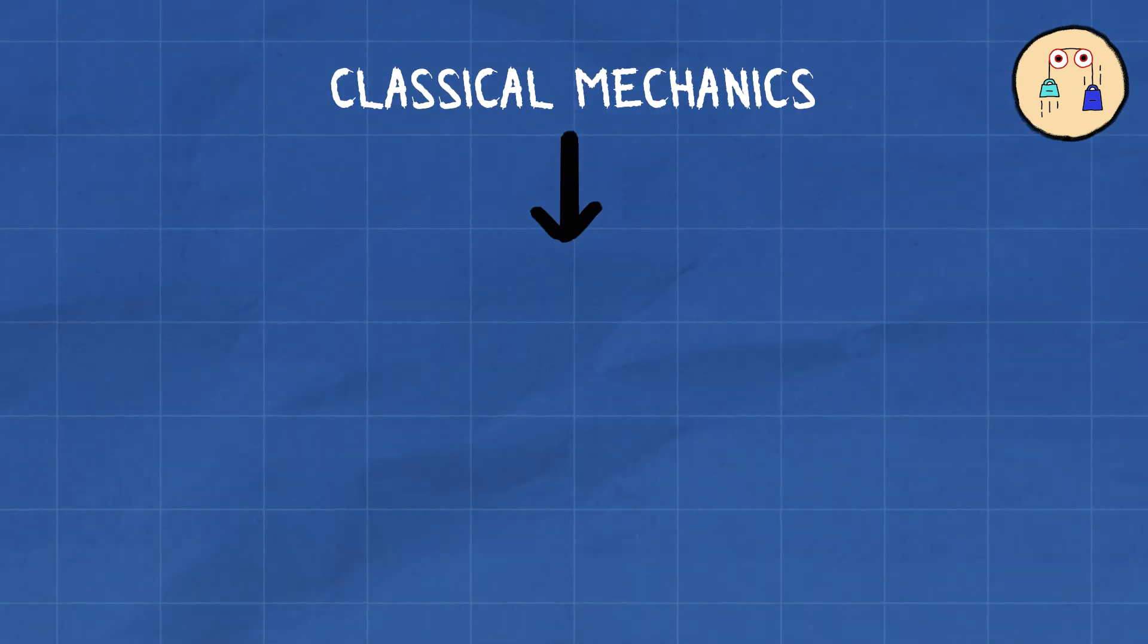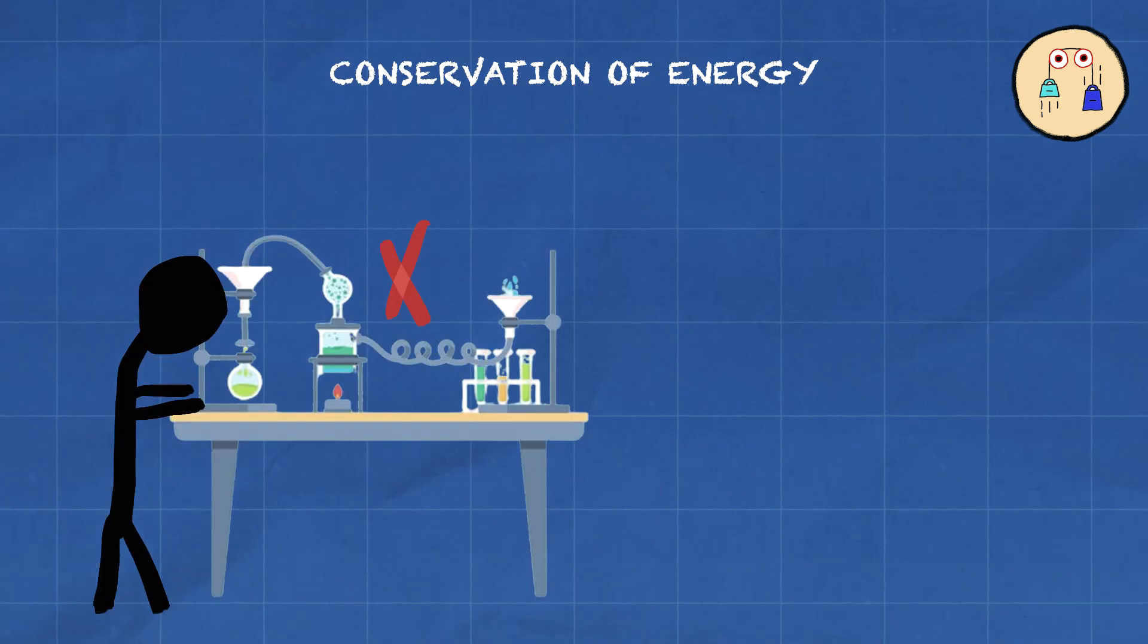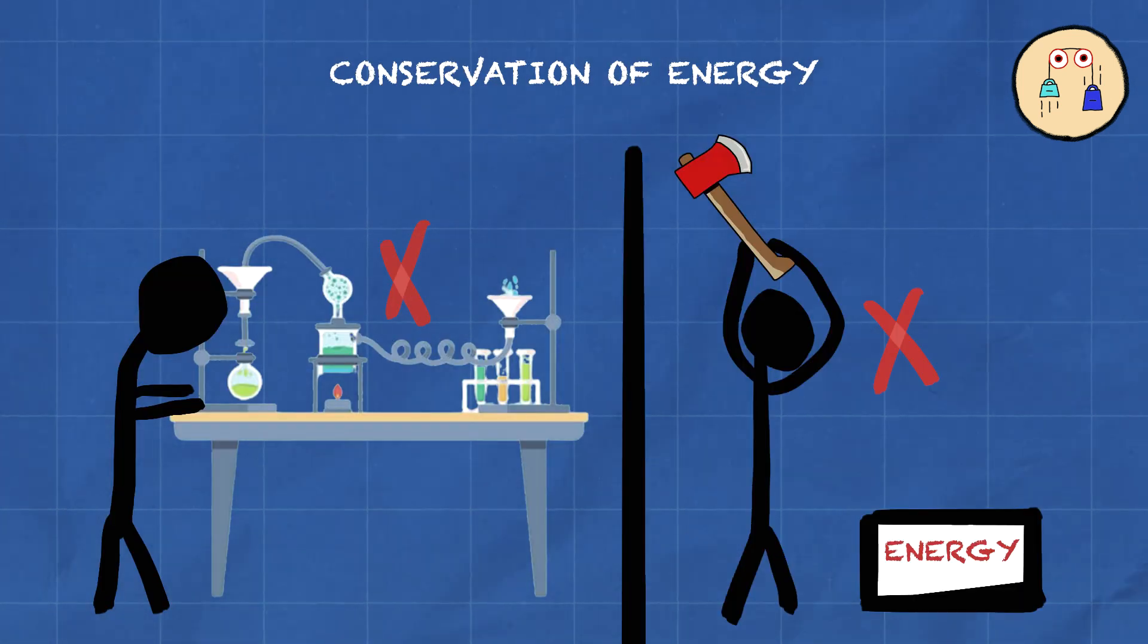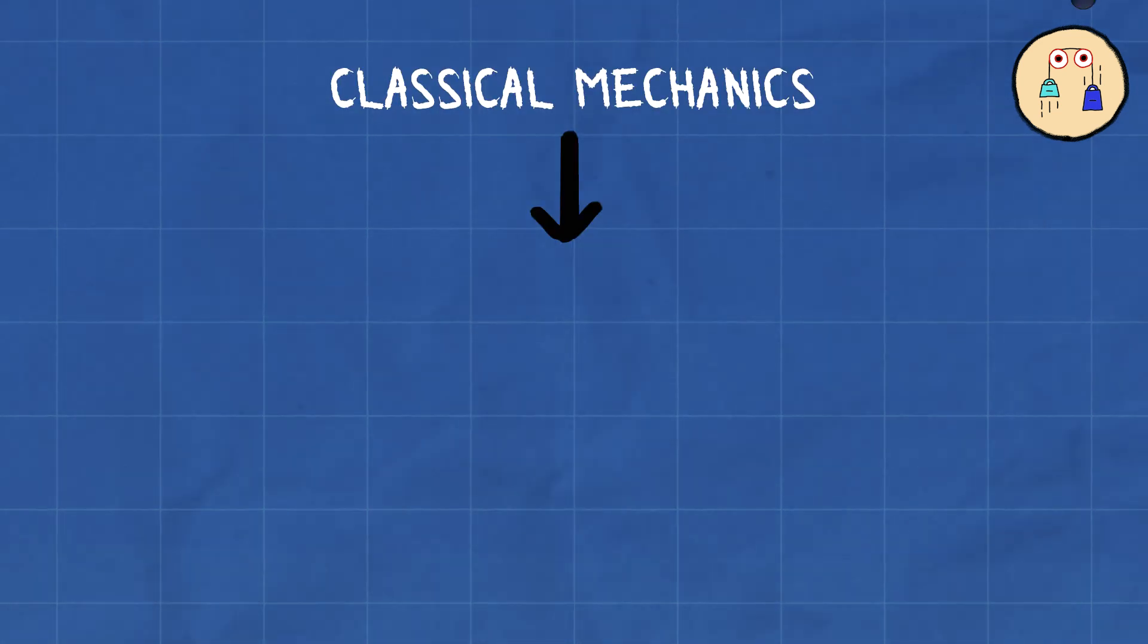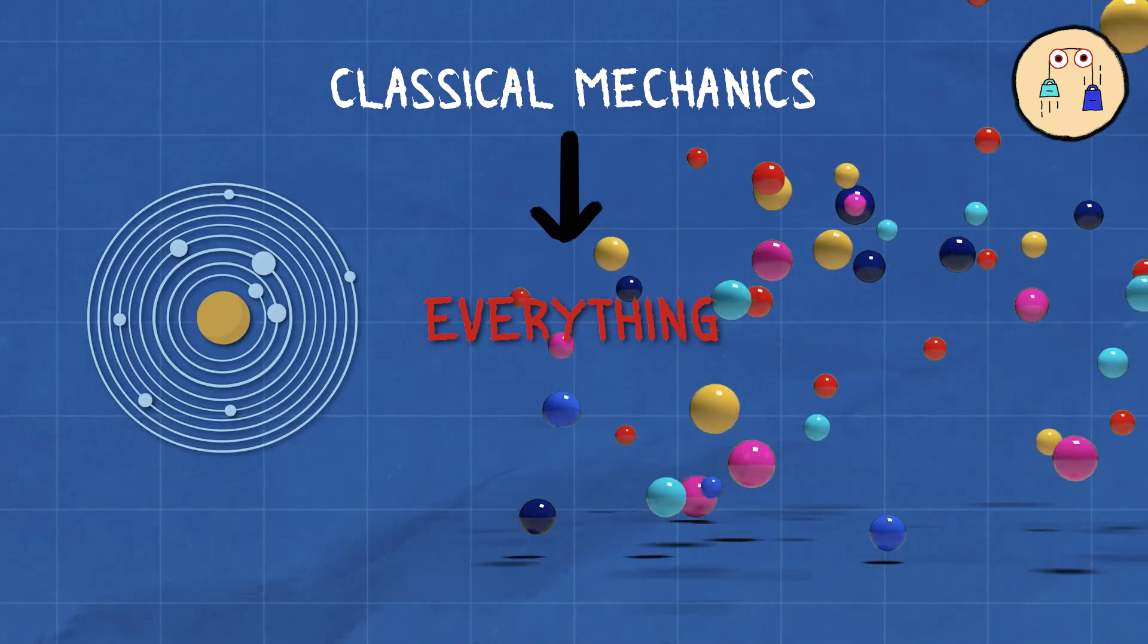Classical Mechanics also throws in some bonus concepts, like conservation of energy, which basically means energy can't be created or destroyed, just transformed. It's like recycling, but for energy. It's a powerful tool for understanding everything from bouncing balls to the intricate dance of planets.